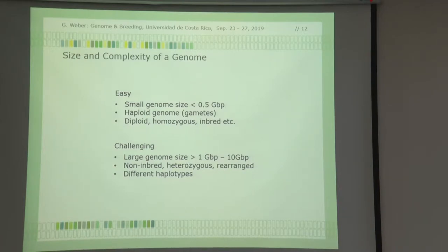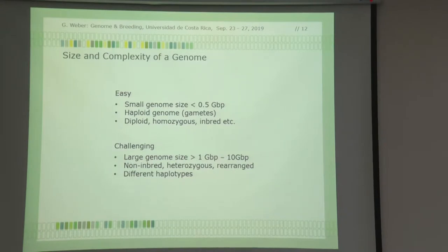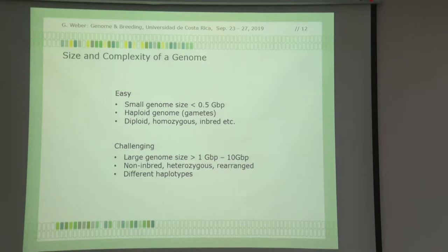Size and complexity of a genome is very interesting to consider. For building an entire genome, for a small genome — less than 500 megabase pairs, like rice or Arabidopsis — these are more tractable. If it's a haploid genome, it's perfect. You have to use ovules, but that's difficult to extract. You could use pollen. If you work with higher plants, the only source of haploid tissue are gametes — in this case pollen. Diploid is also good, preferably homozygous and inbred.